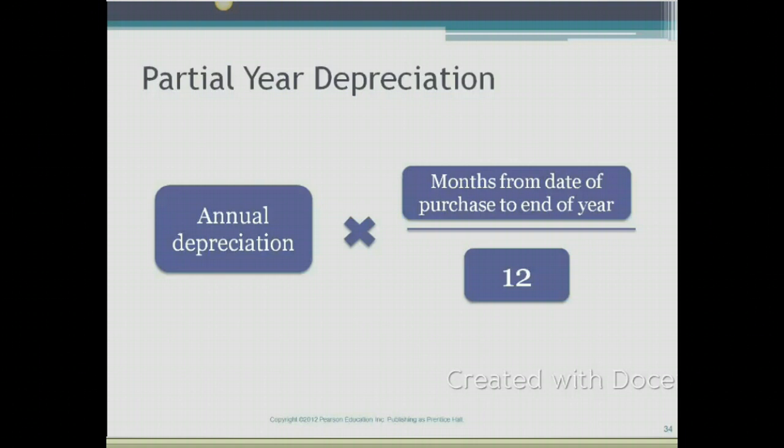Partial year depreciation is calculated for the amount of months that you hold the asset. So you take the annual depreciation calculation that you've done before, but you multiply it by the number of months from the date of purchase to the end of the year, divided by 12. So basically, you're prorating the depreciation based on the number of months that you've held the asset. We'll take a look at an example next.